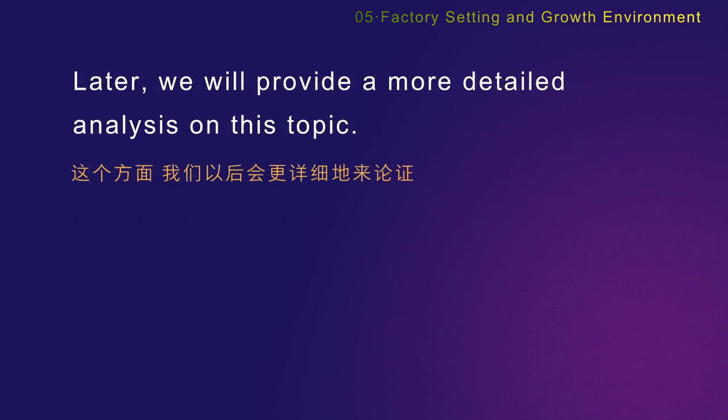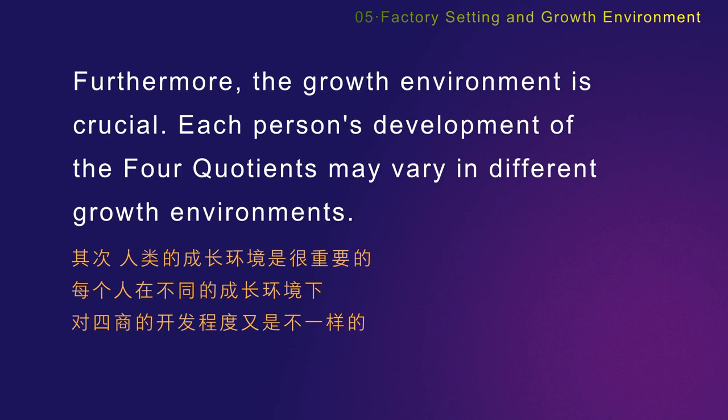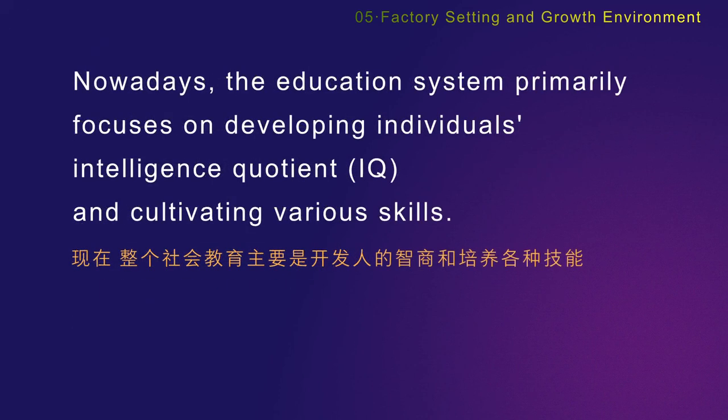Later, we will provide a more detailed analysis on this topic. Furthermore, the growth environment is crucial. Each person's development of the four quotients may vary in different growth environments. Nowadays, the education system primarily focuses on developing individuals' intelligence quotient, IQ, and cultivating various skills.